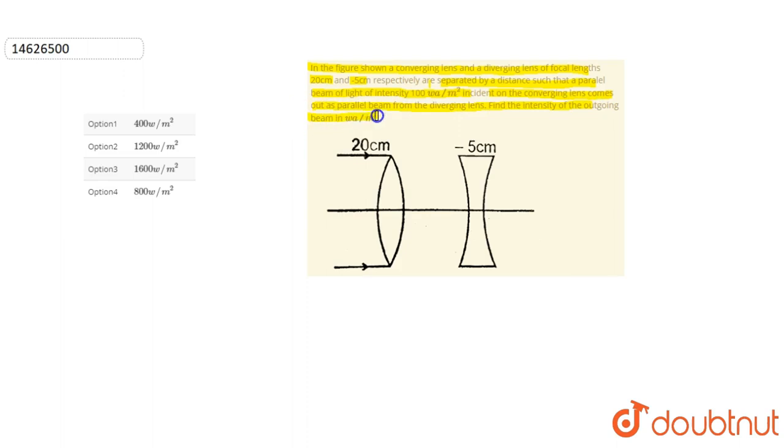The intensity of the outgoing beam is measured in watts per meter squared. The intensity is 100 watts per meter squared.